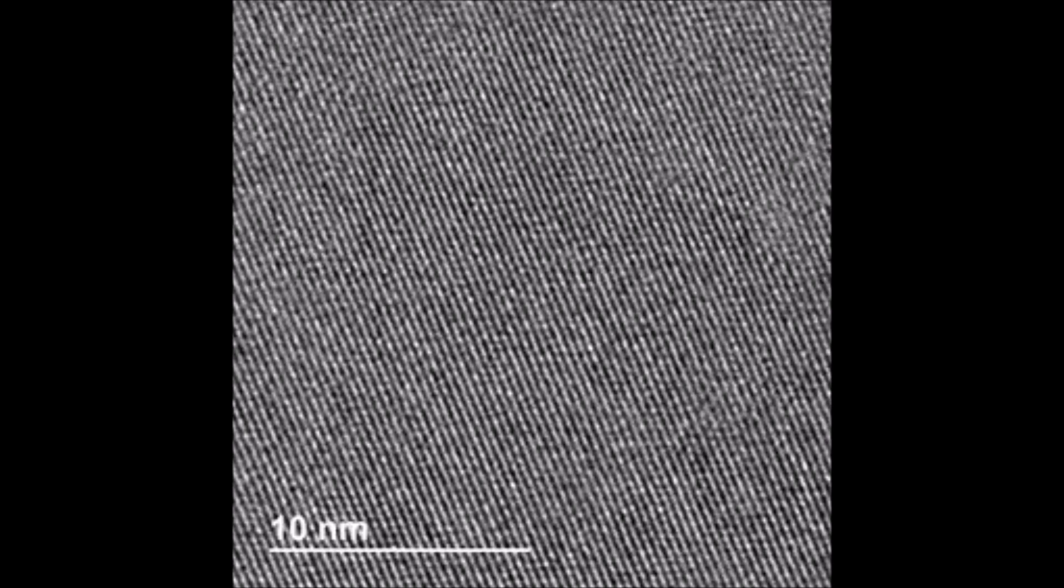So if we look at the same specimen but with the zone axis not well aligned, and in this case I'm off by about 17 milliradians, which is about one degree, we see a marked decrease in the level of detail that can be observed in the image.